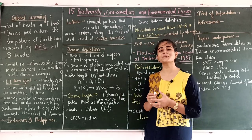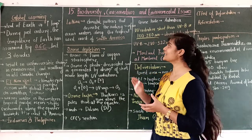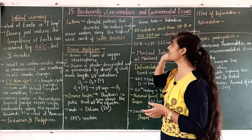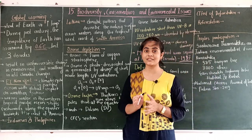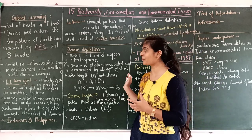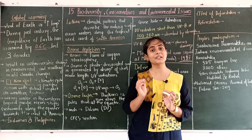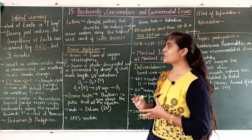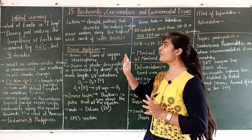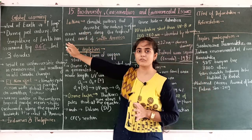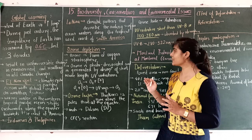Hi everyone, now we are going to complete our topic — that is topic 15: biodiversity conservation and environmental issues. Today is our last lecture of this topic. We have 10 points to discuss: first is global warming, second is ozone depletion, and third is deforestation.